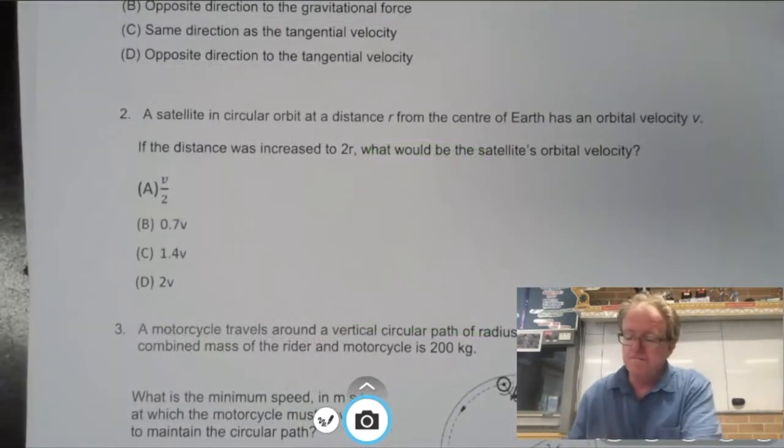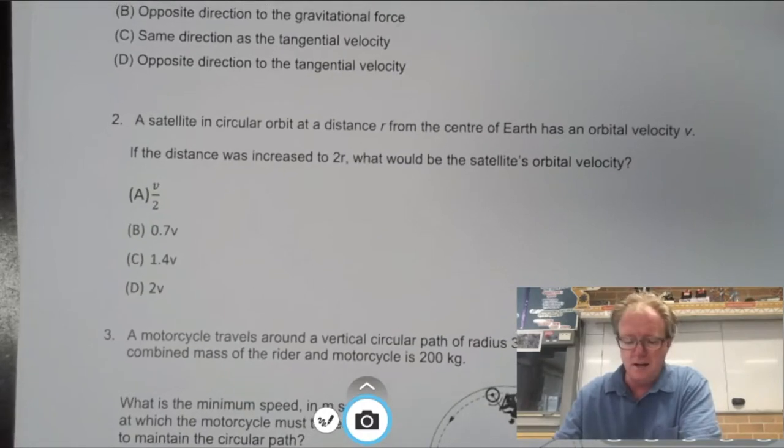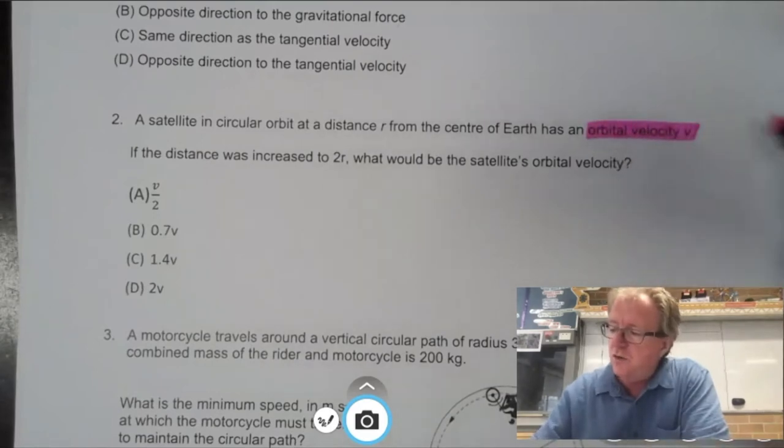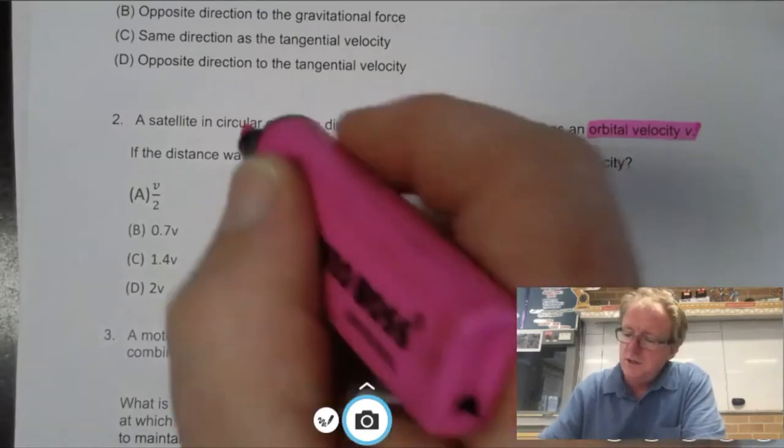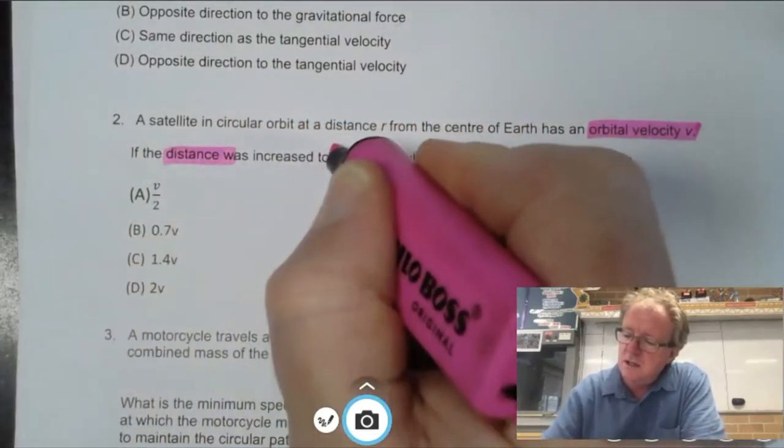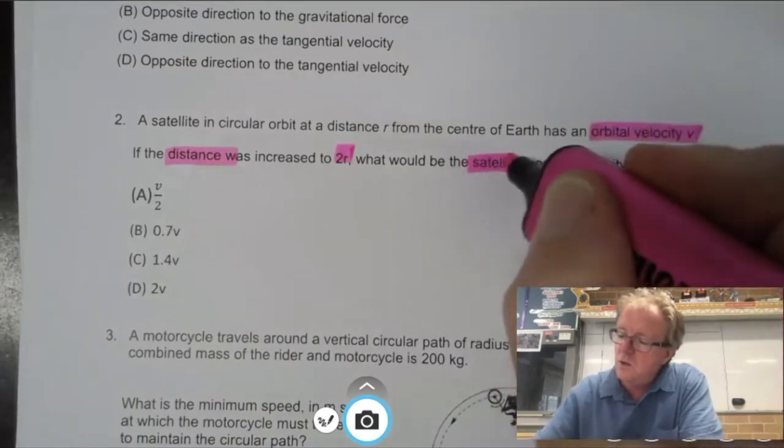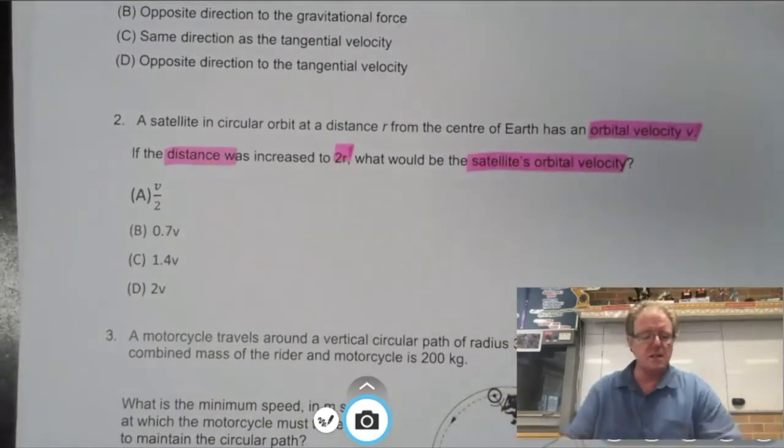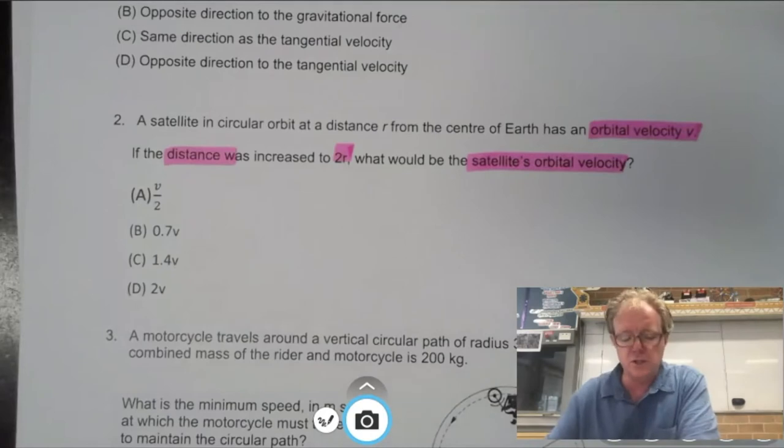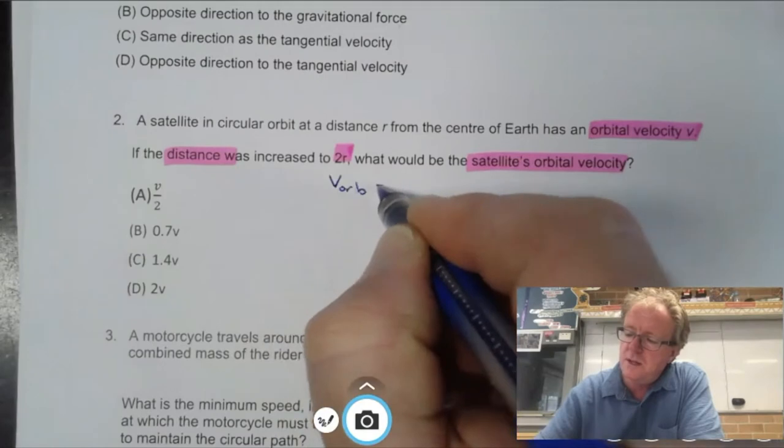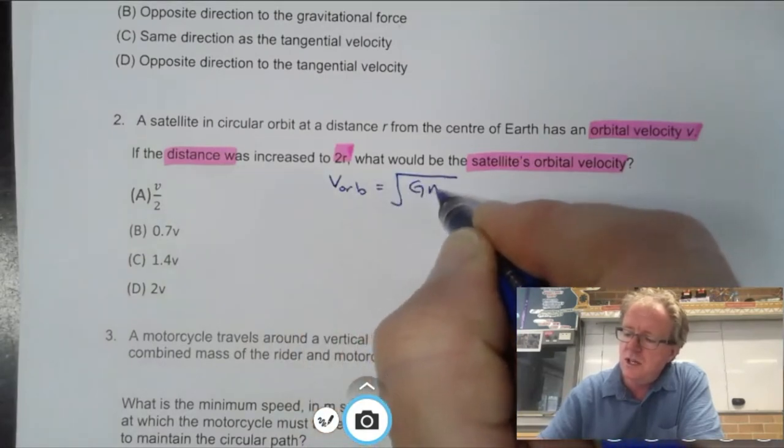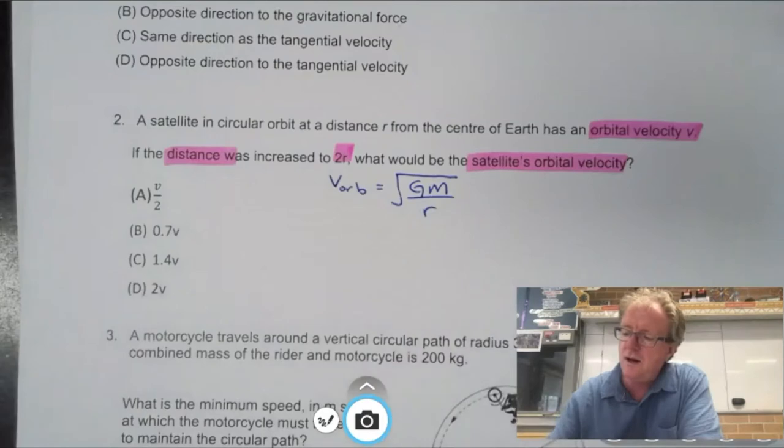Let's do question two. A satellite in circular orbit at a distance r from the centre of the Earth has an orbital velocity. Let's highlight orbital velocity - you need to know what that is. If the distance was increased to 2r, what will be the satellite's orbital velocity? Those are the key terms in this question. First I want to go, okay, orbital velocity. Orbital velocity is equal to the square root of G capital M over r.